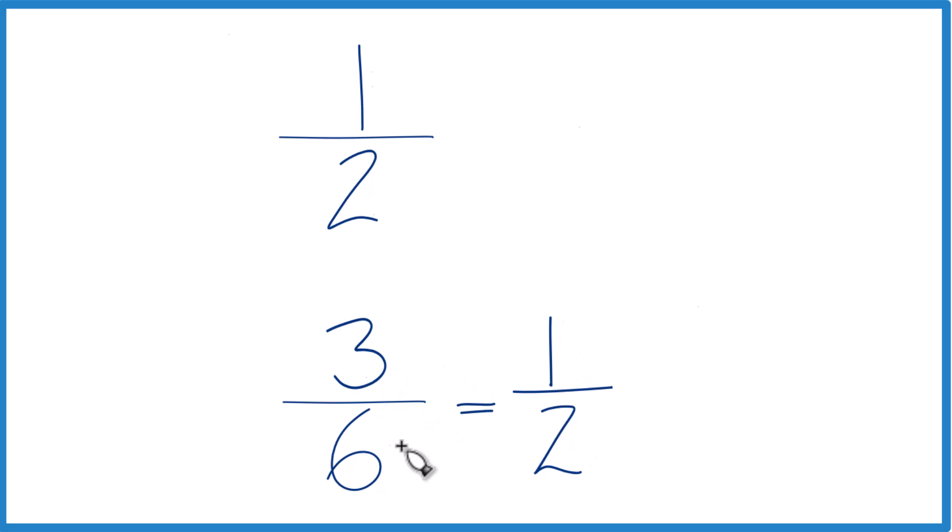That's because 1 half and 3 6 are called equivalent fractions. They're written differently, but they have the same value. Both of these are equal to 0.5, as is 1 half up here.